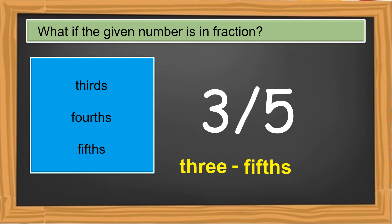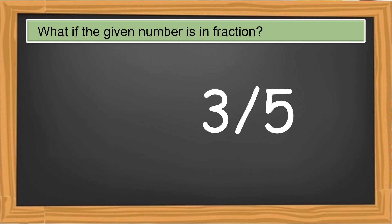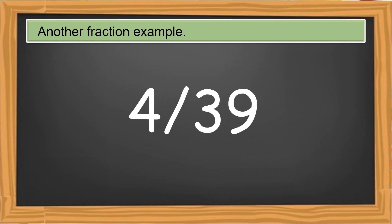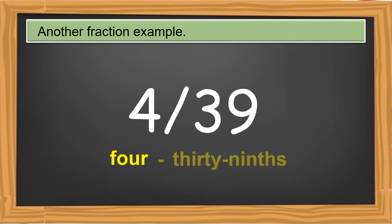Don't forget to write a hyphen. This fraction reads as three-fifths. Another fraction: we have a numerator of four and a denominator of 39. This fraction reads as four-thirty-ninths.